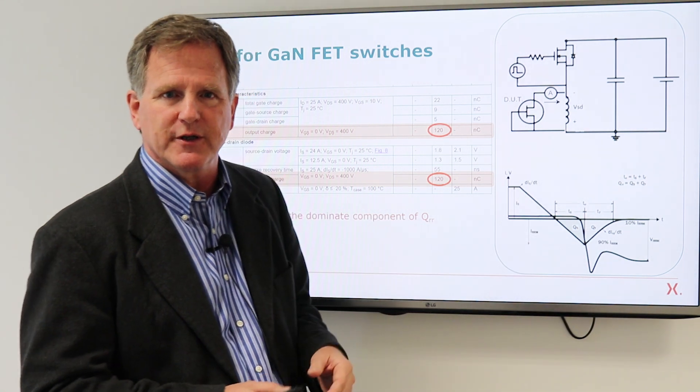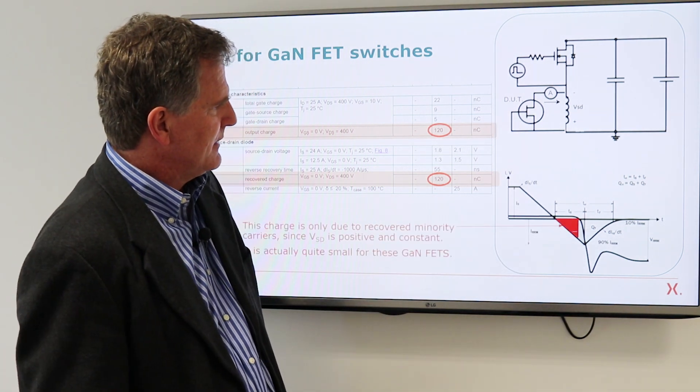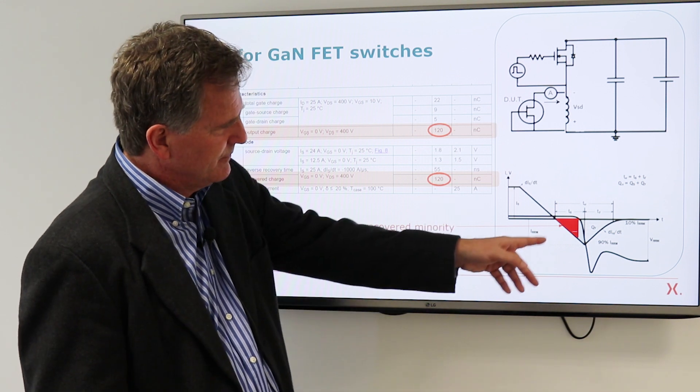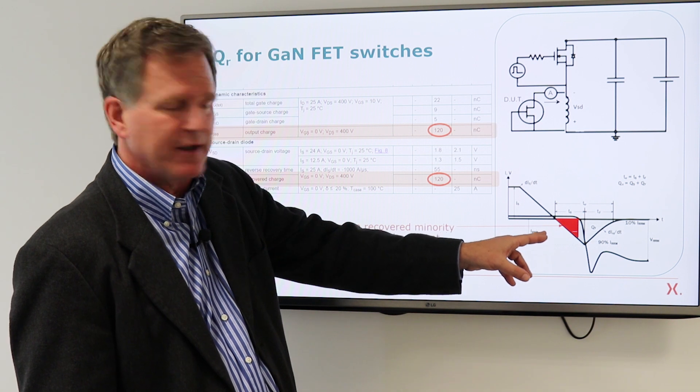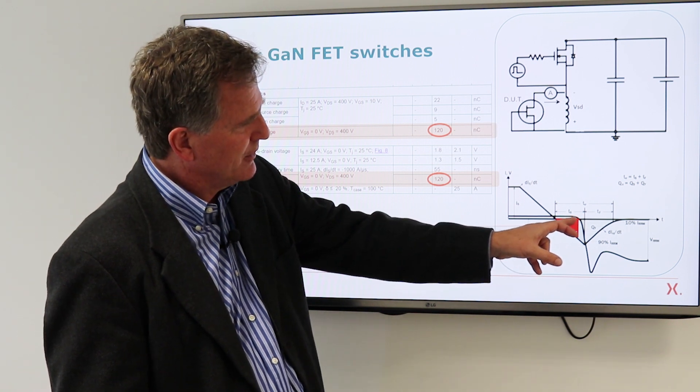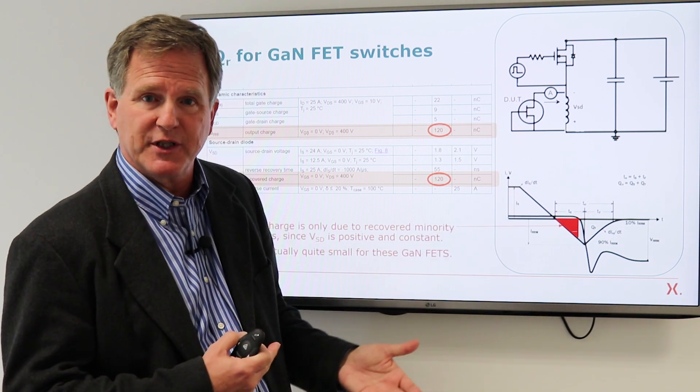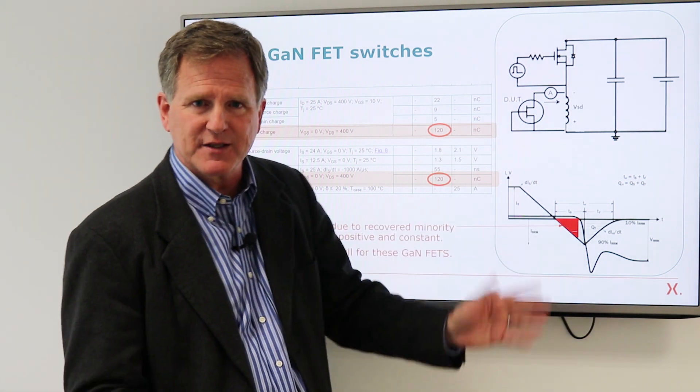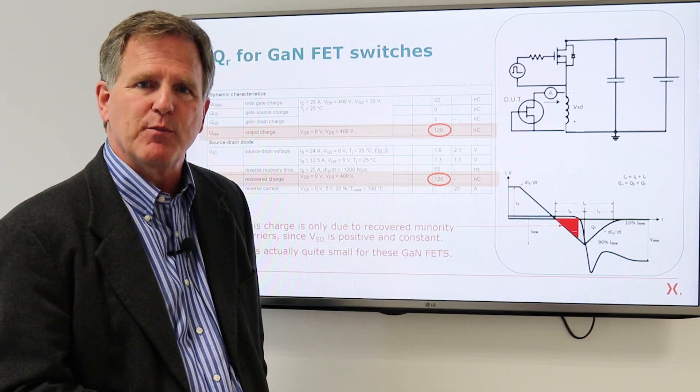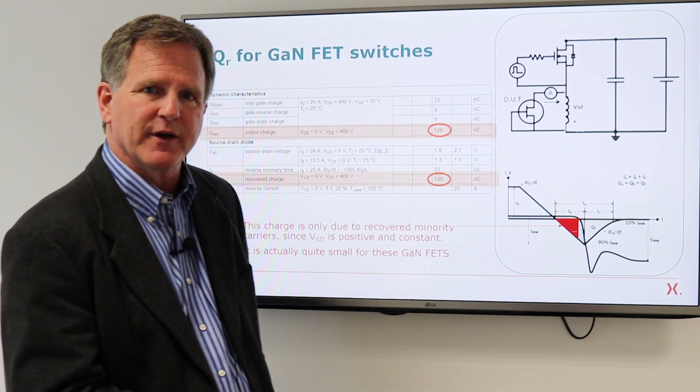And, just as an additional point, if there were minority carrier charge, it would be this part of the curve where the voltage is still positive and constant, meaning we're not charging any capacitance, we're simply removing minority carriers. But like I said, that is actually a very small part of the total charge recovered for our GAN FETs.